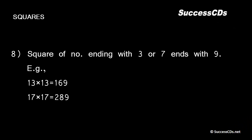The square of a number ending with 3 or 7 always ends with 9. For example, 13² = 169.